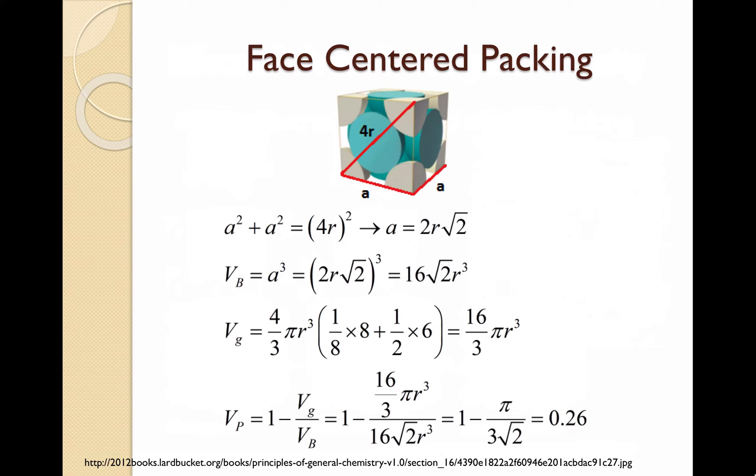Looking at a face centered packing, we use the Pythagorean theorem to solve for side A in terms of the radius. We then substitute that value for A into the bulk volume equation. Finding the volume of the grains is similar to simple cubic, except we now have additional 6 halves of a sphere. Substituting both the grain and bulk volumes into the general equation, we arrive at a porosity of 0.26.